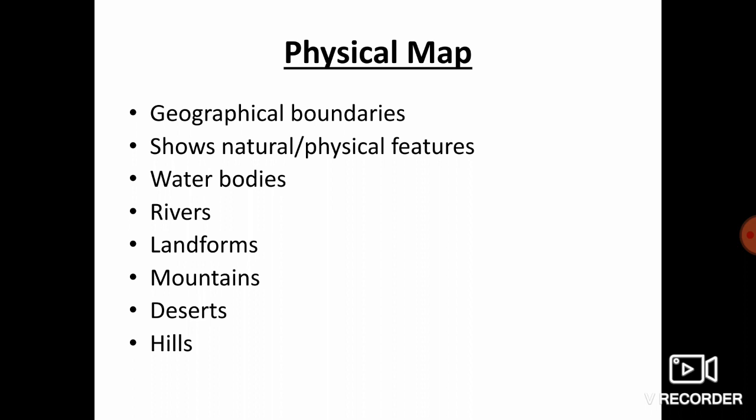So, the physical map shows geographical boundaries. In other words, they show natural or physical features such as water bodies, rivers, landforms, mountains, deserts, and hills.